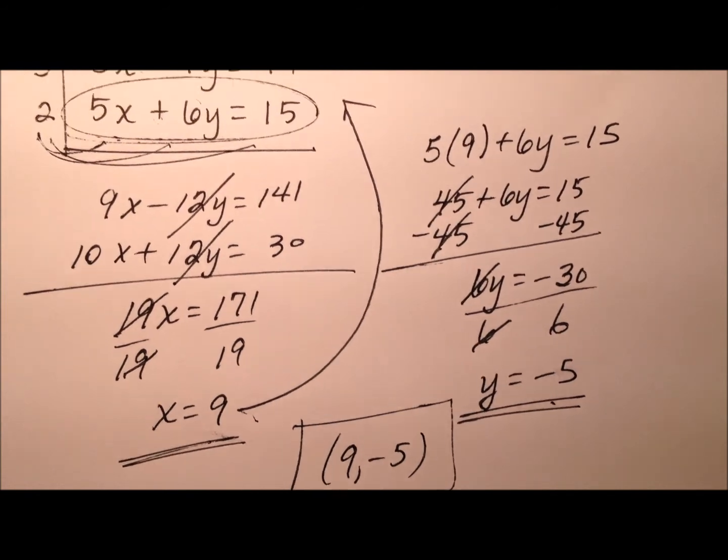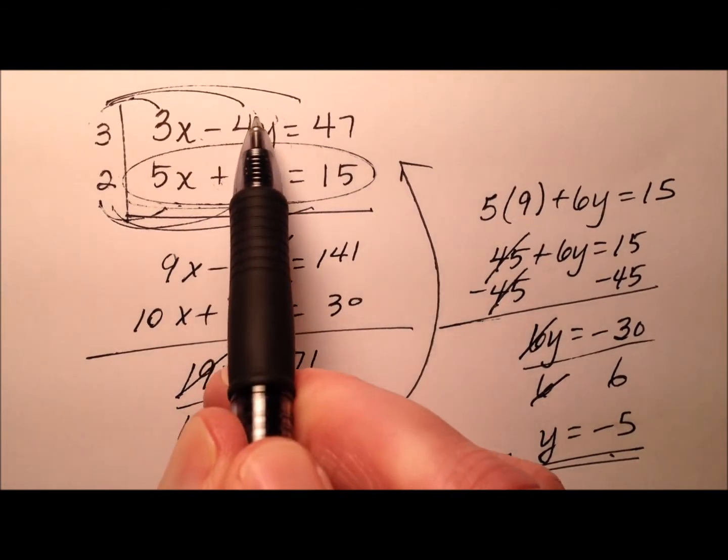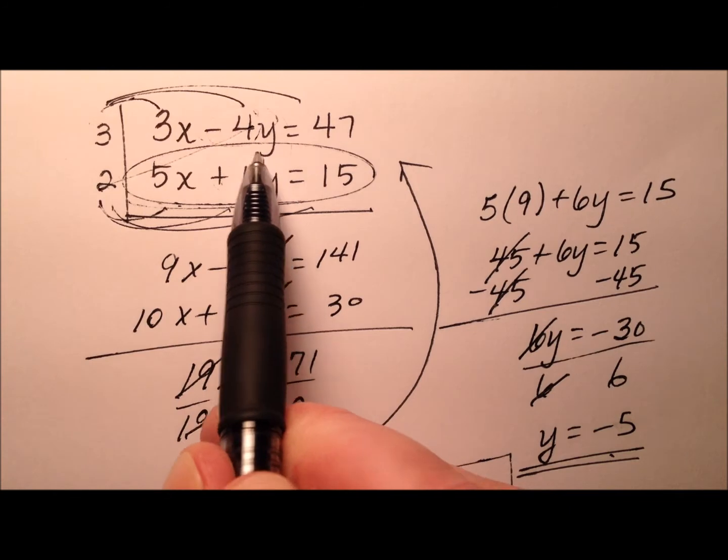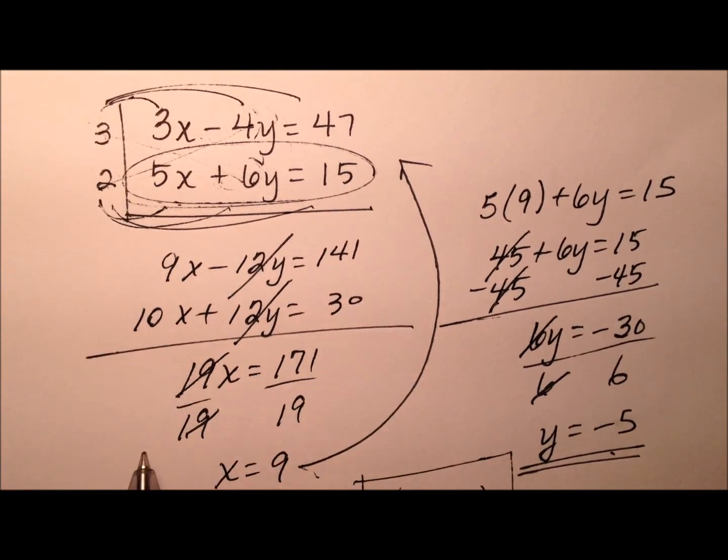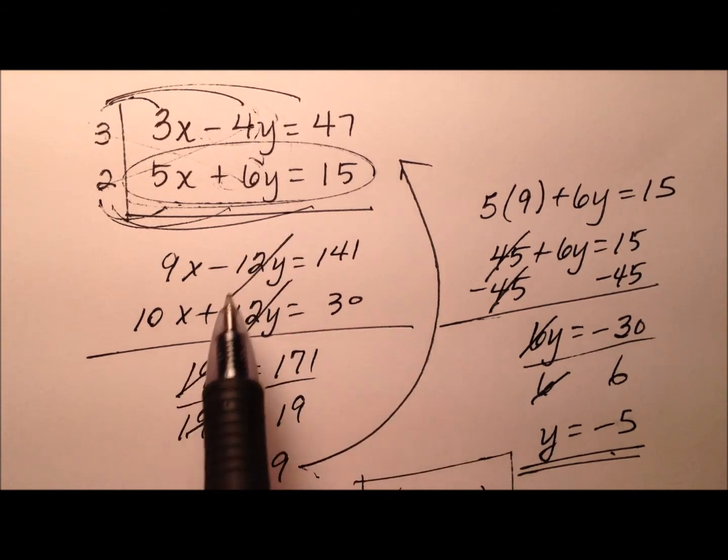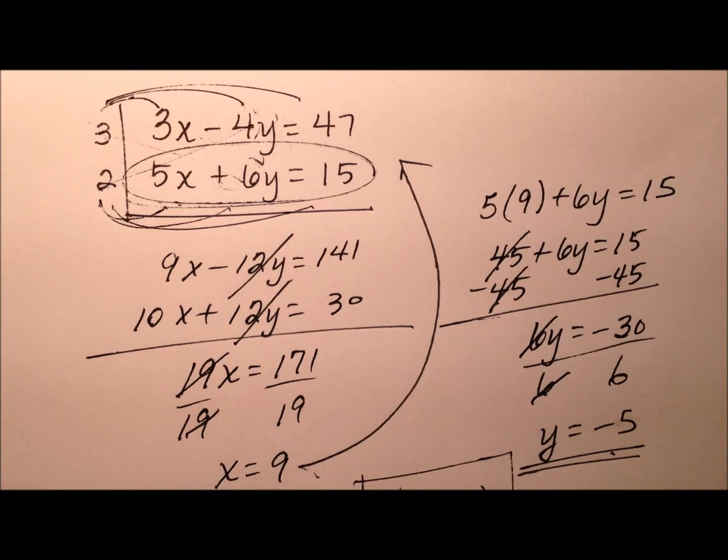So here will be our ordered pair, 9 and negative 5. And again, the strategy we used, instead of outright taking this 4 and multiplying them here, and the 6 multiplying them here, we were actually able to use smaller numbers because 4 and 6 had a least common multiple other than just multiplying them together. So that's going to be one strategy we can use.